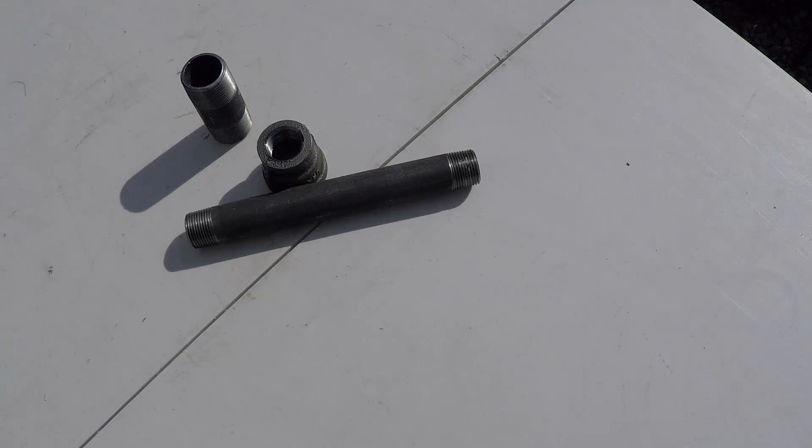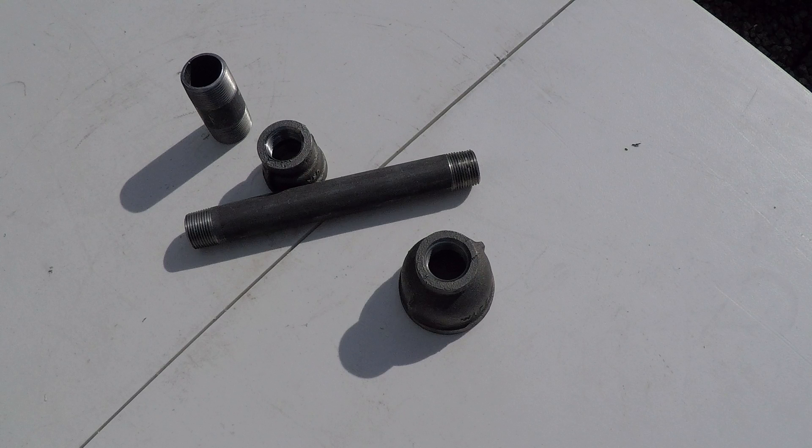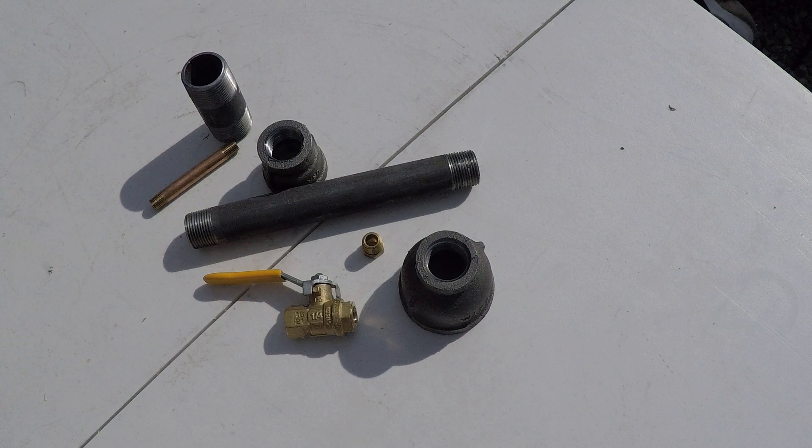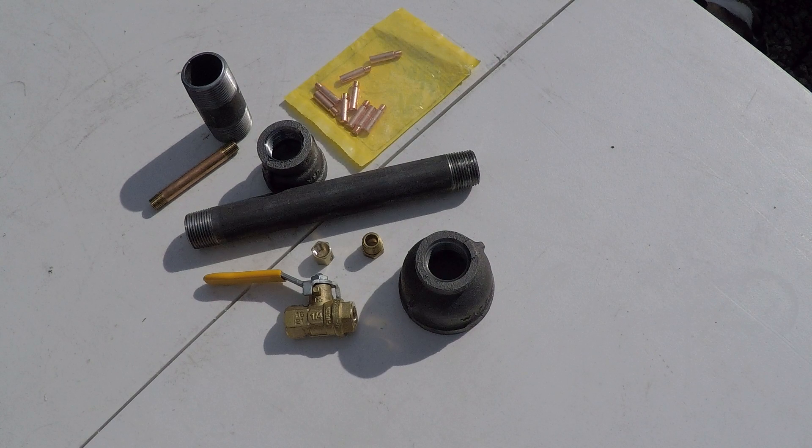The parts we're going to need for this project are a piece of 1-inch cast iron pipe, a 1-inch to 3-quarter inch reducer, a 9-inch piece of 3-quarter pipe, a 1-1/2 inch to 3-quarter inch reducer, a 1-4 inch ball valve, a 1-8 inch pipe, a 1-8 inch to 1-4 inch bushing, a 1-8 inch end cap, and optionally some MIG welding tips.